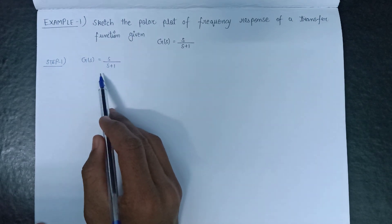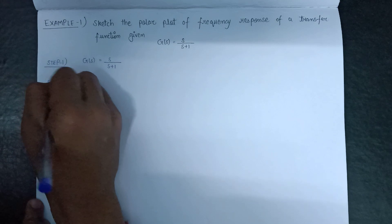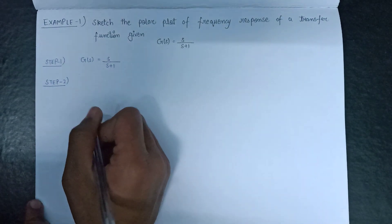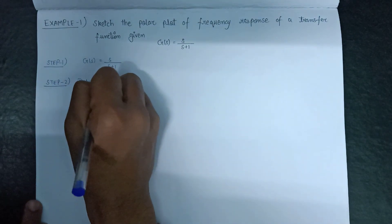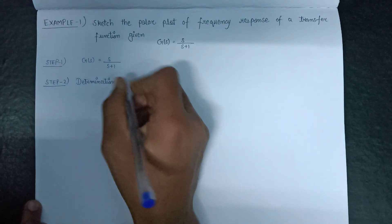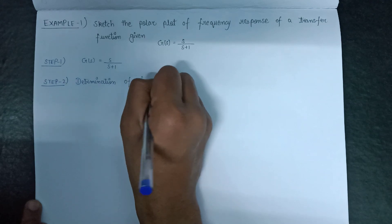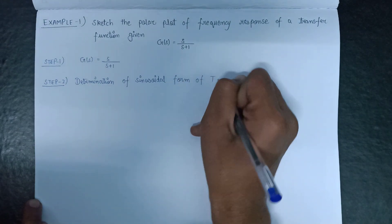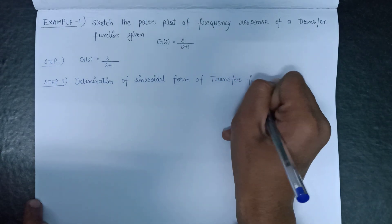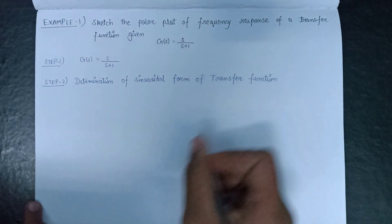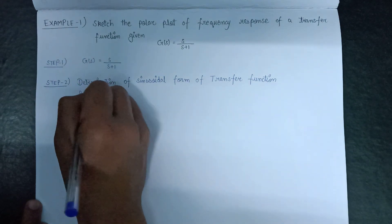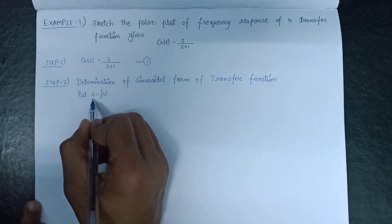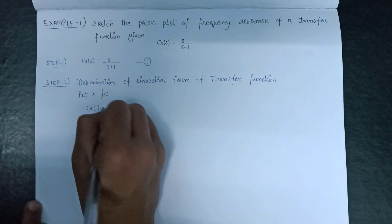This is our open loop transfer function. Moving on to the next step, that is step 2, which is determination of the sinusoidal form of transfer function. We have to replace s with j omega. On replacing s equals j omega we get G(jω) equals j omega over j omega plus 1.